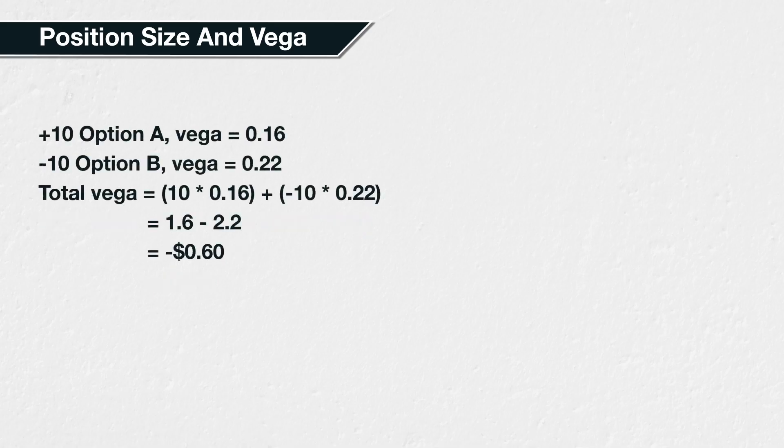And finally, if you purchase 10 options with a vega of 0.16, and sell 10 options with a vega of 0.22, the total vega of your position is minus 60 cents. This is calculated as 10 multiplied by 0.16, plus minus 10 multiplied by 0.22, which equals $1.60 minus $2.20, or minus 60 cents. Remember, we have sold the second leg here, so the position size is minus 10, rather than just 10. This gives us negative vega for that leg, and the total position also now has negative vega. This means you would expect to lose 60 cents if implied volatility increases by 1% and all else remains equal.